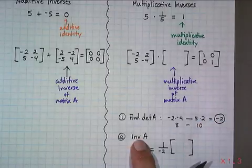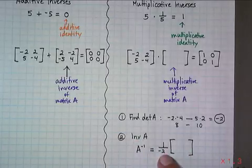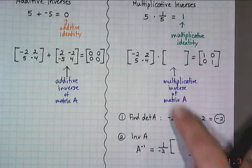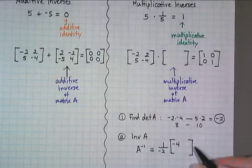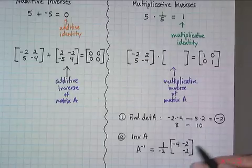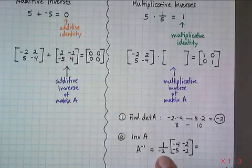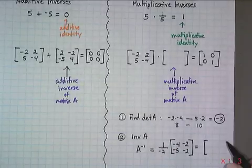When you find the inverse of A, you write 1 over negative 2, 1 over the determinant. I'm not going to write the exact same matrix, I'm going to write A and D switched and B and C negated. Then you multiply this fraction times each element, and the result is the inverse.